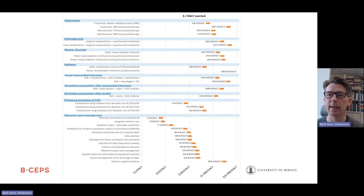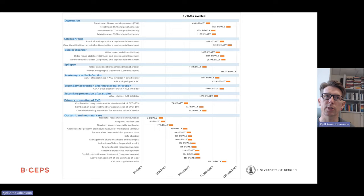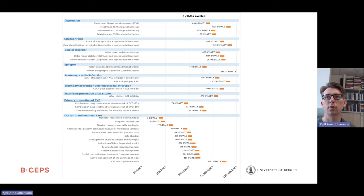If your willingness to pay is $300, it means you would have to say no to all mental disorders, neurological disorders, and cardiovascular disease interventions except antihypertensives — if you have a high risk, for example 35%, for starting antihypertensive and statin treatment. In that case, the cost-effectiveness rate is $74 per disability-adjusted life year. This is an example of how you can use cost-effectiveness to rank-order interventions and set priorities.